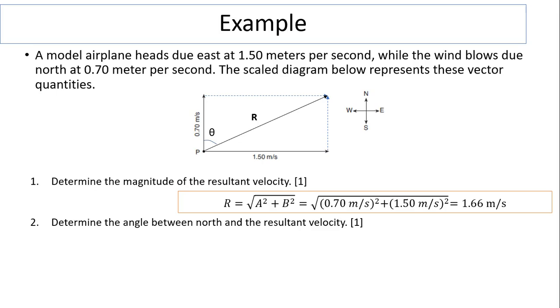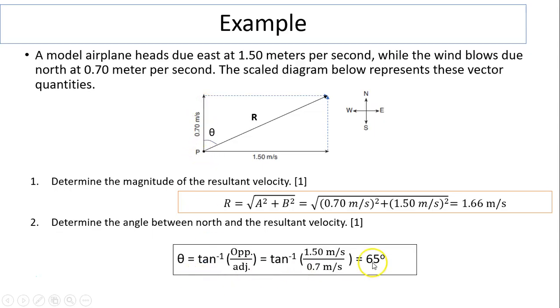Next, to determine the angle between north and the resultant velocity, we can use TOA, which is tangent. Because we know the opposite, which is 1.5, and adjacent is 0.7, we have 65 degrees. In the previous solution, we had the same 65 degrees.